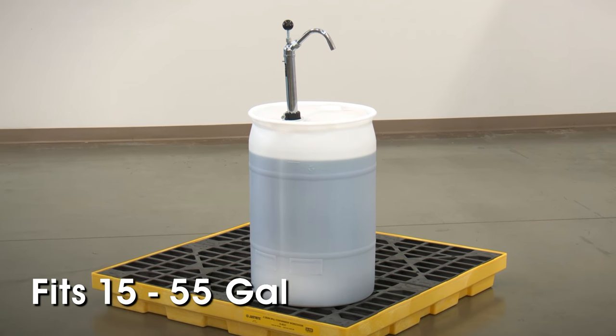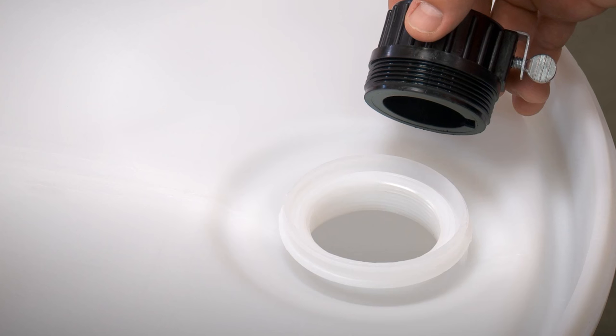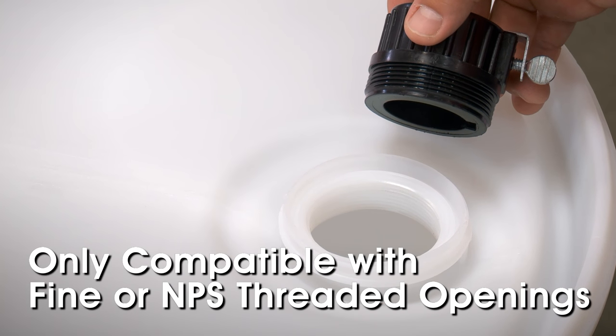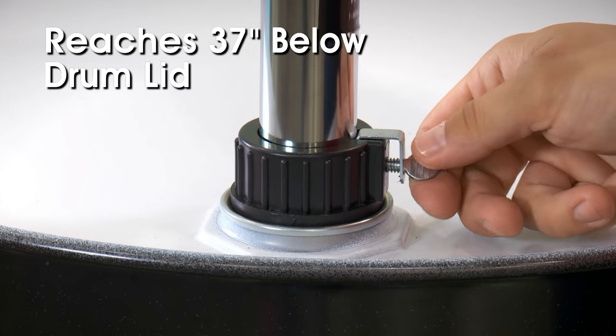The pump fits 15 to 55 gallon drums with a 2 inch neck size. Steel drum pumps are only compatible with fine or NPS threaded drum openings and reach 37 inches below the drum lid.